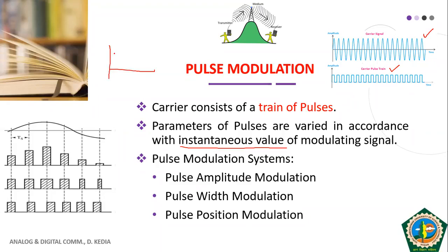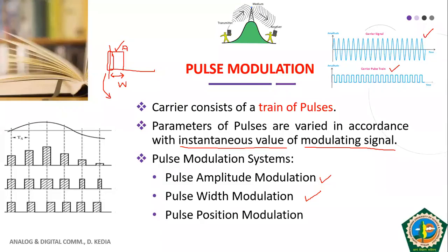In the pulsed carrier, we have three things that can vary: the amplitude of the pulse, the width of the pulse, and the position of the pulse — that is, the position at which the pulse starts. These three things — amplitude, width, and position — can be changed in accordance with the instantaneous value of the modulating signal. If we vary the amplitude, we call it pulse amplitude modulation (PAM). If we vary the width, it is pulse width modulation (PWM). If we vary the position, it is pulse position modulation (PPM).